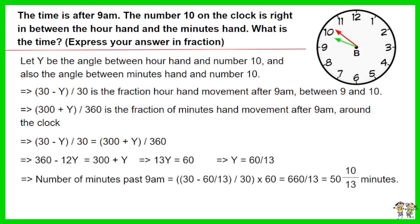The number of minutes past 9am equals 30 minus y, divided by 30, times 60, which equals 50 and 10 over 13 minutes. The time is 9:50 and 10 over 13 am.